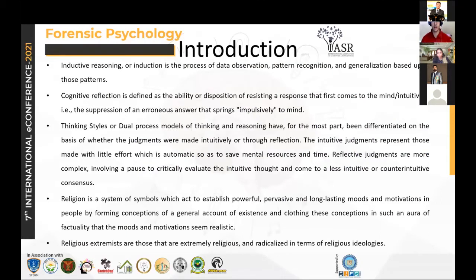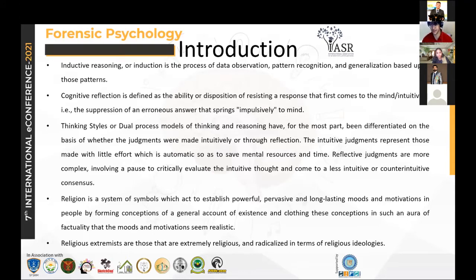Thinking styles are basically of two kinds: rational and experiential. Rational thinking uses conscious cognitive skills to arrive at an answer. Experiential thinking is intuitive — gut feelings from day-to-day life, more unconscious in nature. Religion is a system of symbols which act to establish powerful, pervasive, and long-lasting rules — certain ideologies that are long-term and pervasive and can be a cause for an individual's motivations. Extremists are those that are extremely religious and radicalized in terms of religious ideologies.